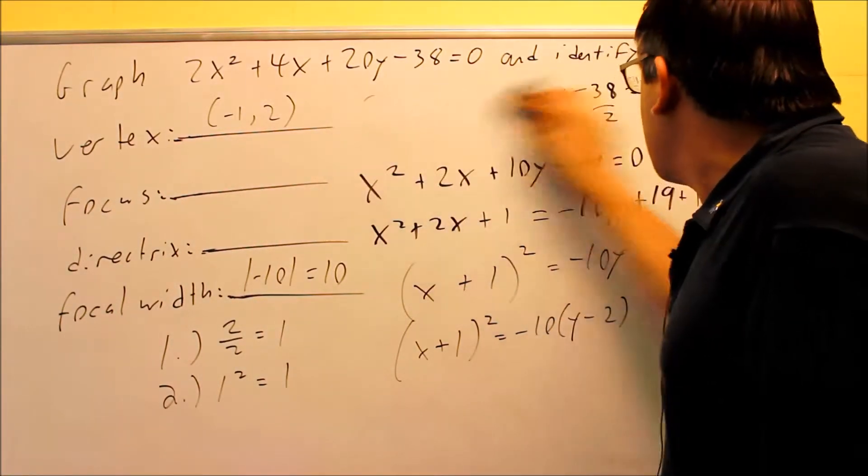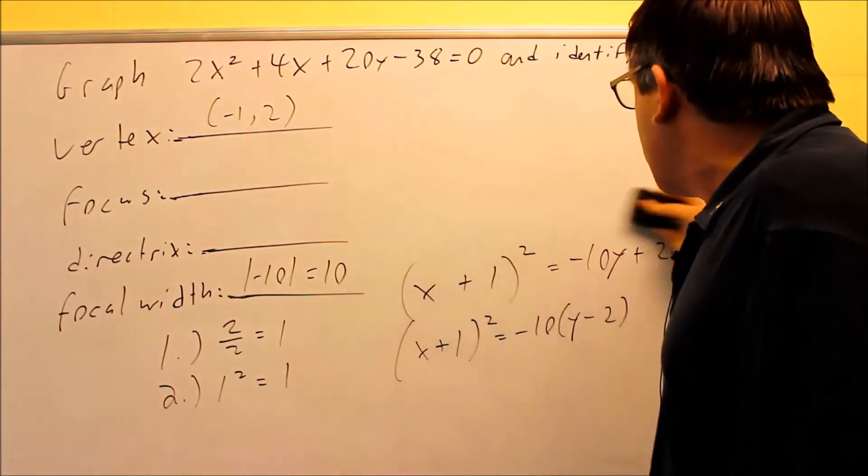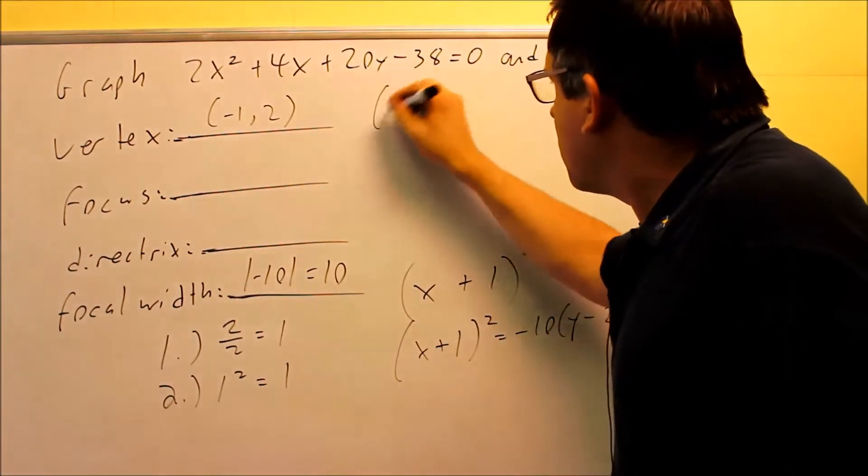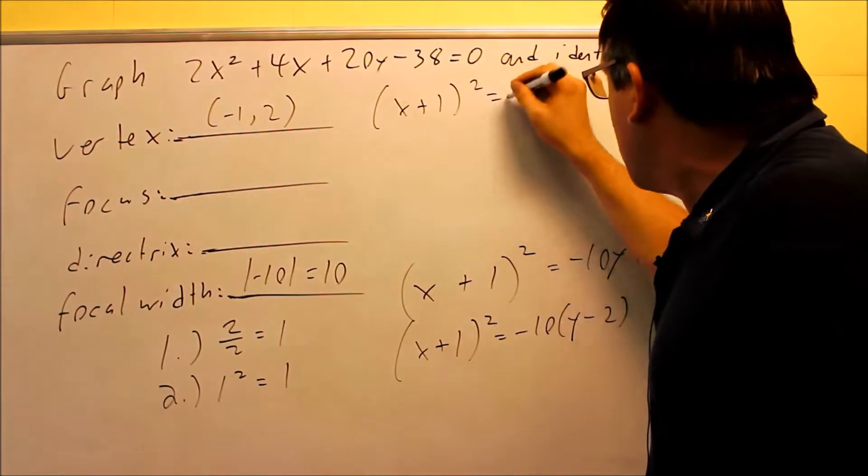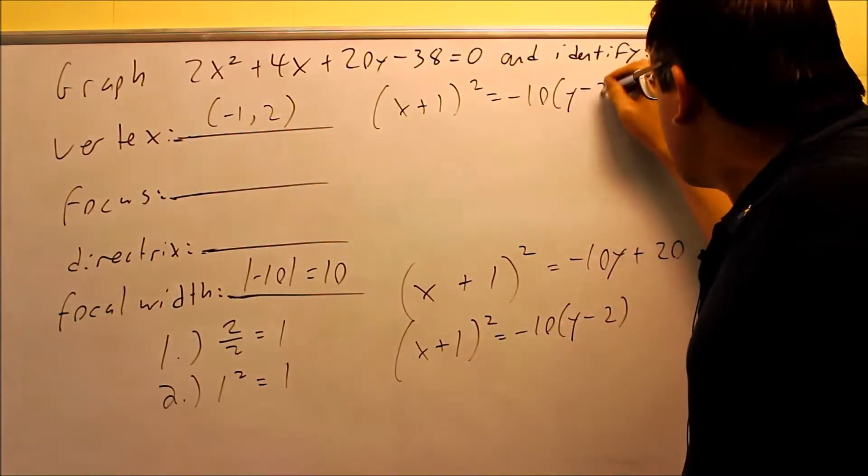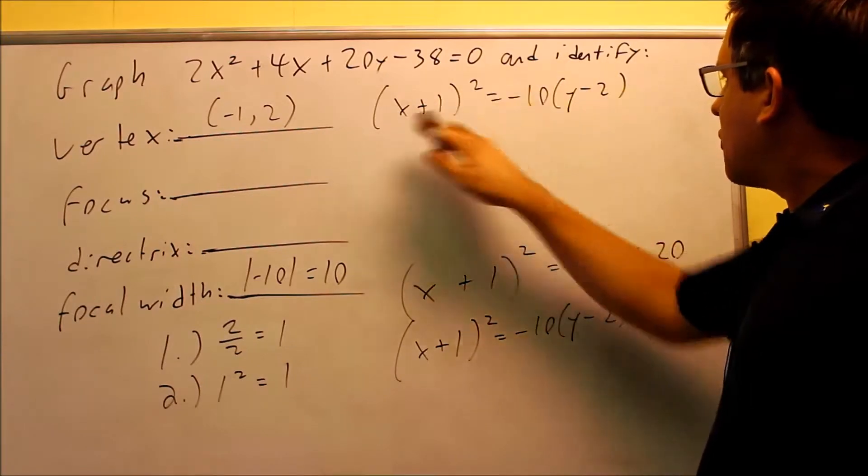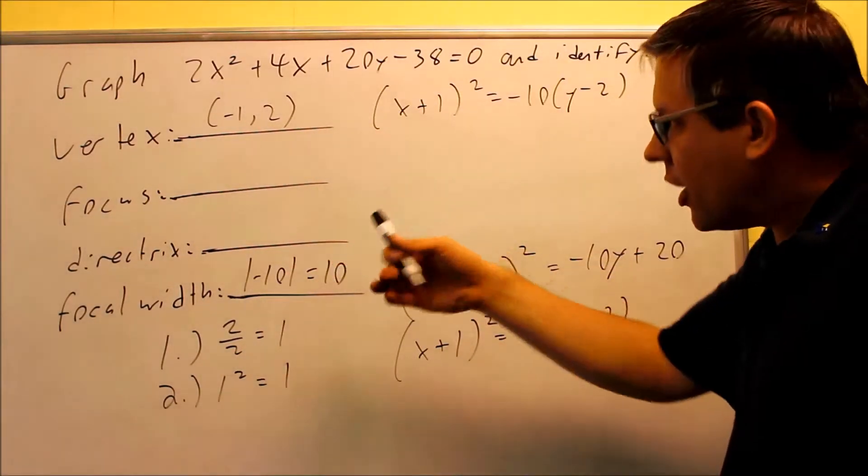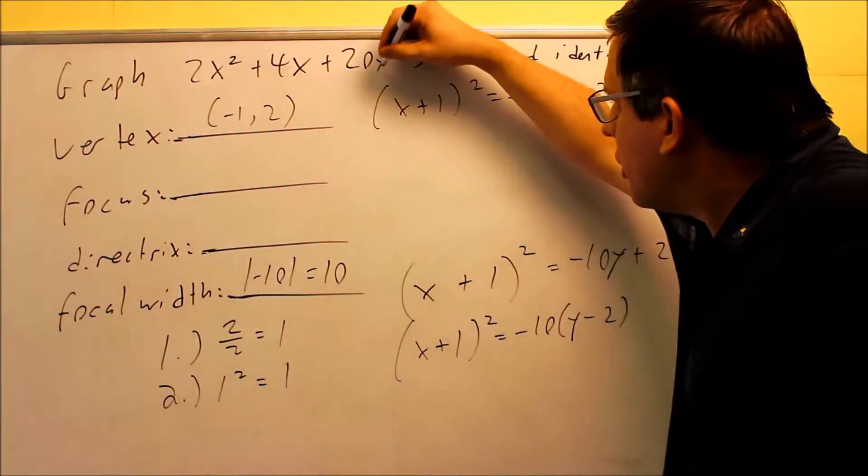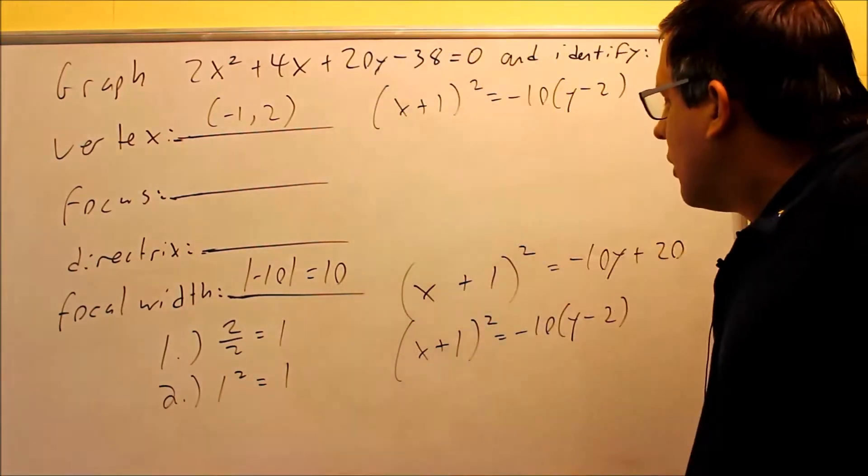I'm going to go ahead and clear some space now. We're going to be ready to draw the graph. So the equation that we're going to use here, x plus 1 squared equals negative 10 times y minus 2. This is going to exactly equal this one. If we were to take this and expand it all out and multiply the whole thing back through by 2 again, we would get exactly the same thing that we started with.